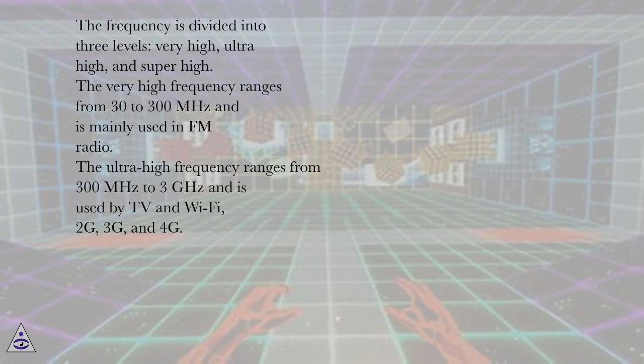The frequency is divided into three levels: very high, ultra high, and super high. The very high frequency ranges from 30 to 300 megahertz and is mainly used in FM radio. The ultra high frequency ranges from 300 megahertz to 3 gigahertz and is used by TV and Wi-Fi, 2G, 3G, and 4G.